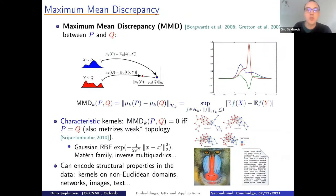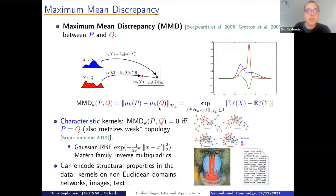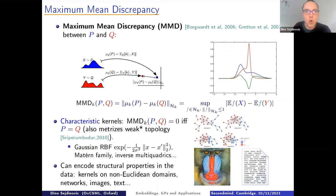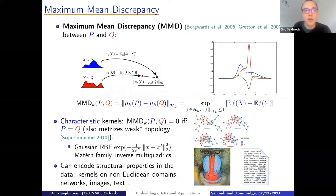One of the simplest uses of kernel mean embeddings is to compute distances between probability distributions. The distance induced by kernel mean embedding is known as maximum mean discrepancy, or MMD, used in many different applications. For a broad class of kernels called characteristic kernels — including Gaussian and Matérn family kernels — these embeddings fully characterize probability distributions, giving a proper metric on probability distributions.